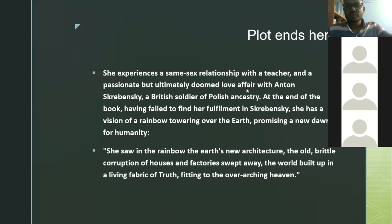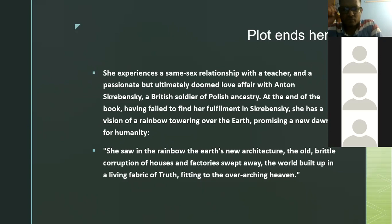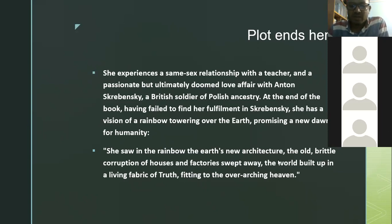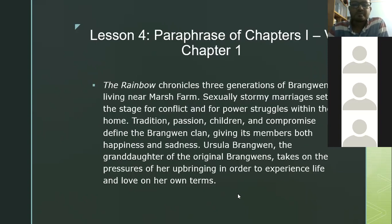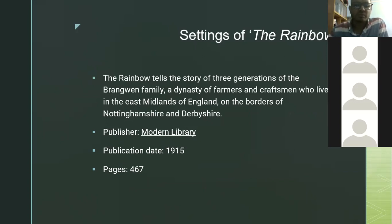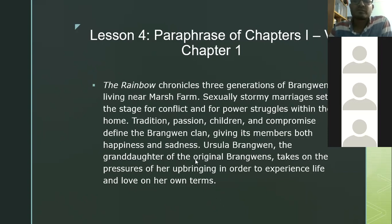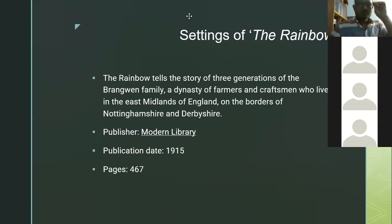She experiences a same-sex relationship with a teacher and a passionate but ultimately doomed love affair with Anton Skrebensky, a British soldier of Polish ancestry. At the end of the book, having failed to find her fulfillment in Skrebensky, she has a vision of a rainbow towering over the earth, promising a new dawn for humanity — the world built up in a living fabric of truth fitting to the overarching heaven. We have already discussed the setting and will discuss the novel text from chapter 1 to 5 next week. Thank you very much today.